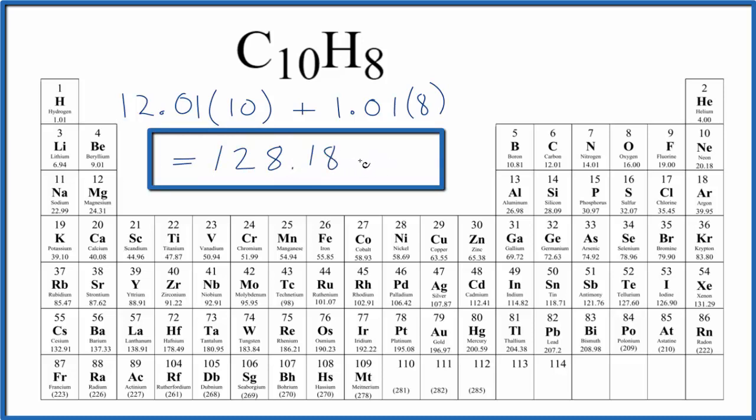And the units here, those are going to be grams per mole. Note that my periodic table rounds to two decimal places. If your periodic table is different, you might get a slightly different answer. What that means is if I have one mole of this naphthalene, C10H8, it'll have a mass of 128.18 grams.